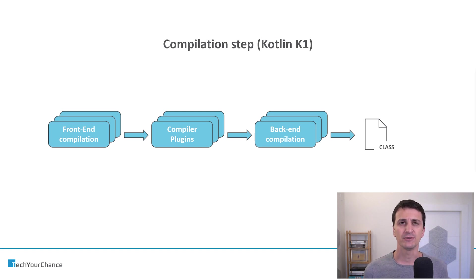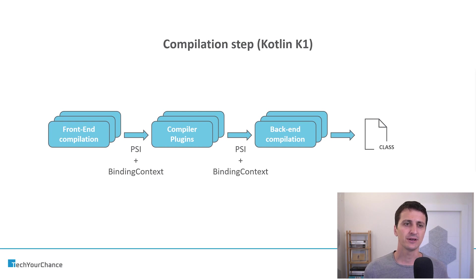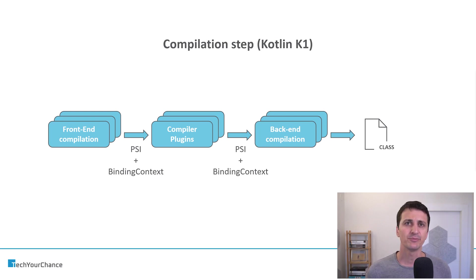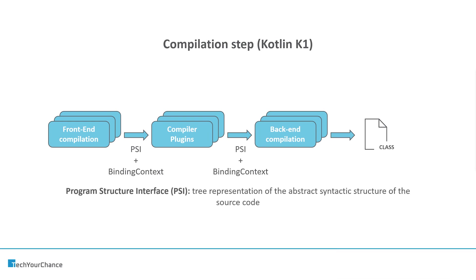The plugins sit between front-end and back-end compilation steps, and the data structures used to convey data from the front-end to the back-end are: PSI and binding context. PSI stands for Program Structure Interface, and for our purposes you can think of it as an AST — an Abstract Syntax Tree. There is a lot of similarity between PSI and AST, and in addition, the binding context contains additional semantic information about different nodes inside the PSI tree.